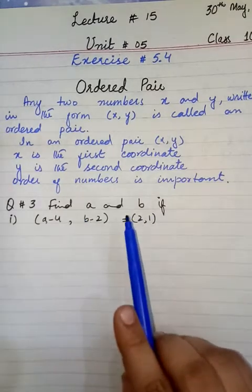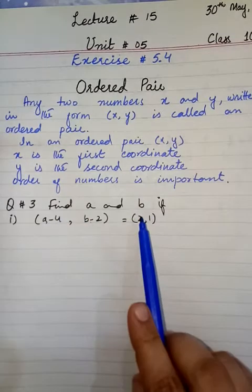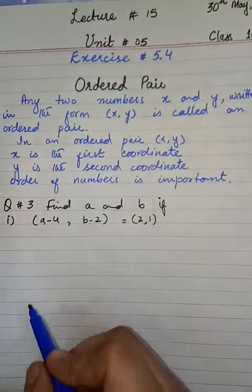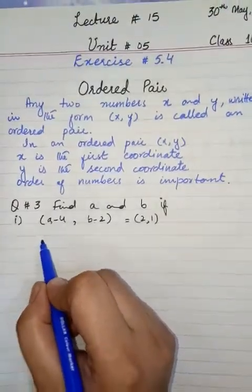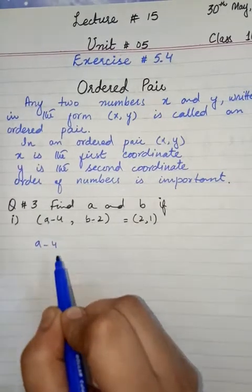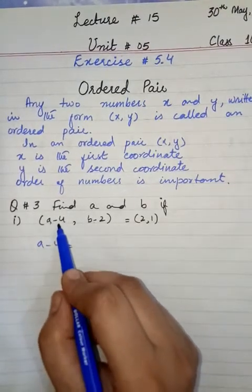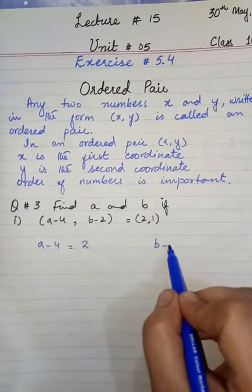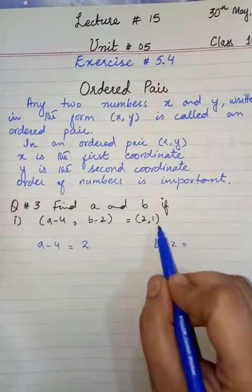If two ordered pairs are equal, their corresponding entries must be equal. It is the property of ordered pair that their corresponding entries must be equal. So A-4 will be equal to 2 and B-2 will be equal to 1.